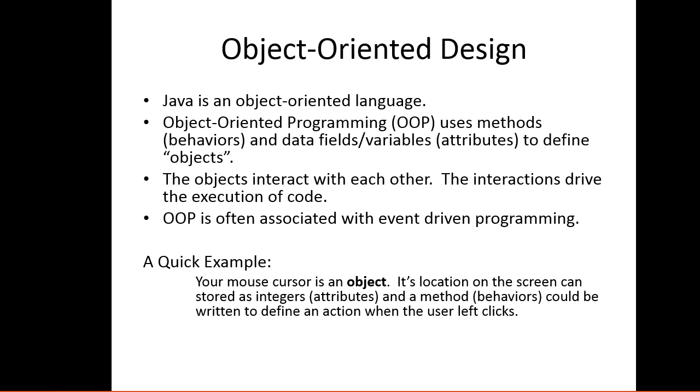Let's talk about object-oriented design. Java is an object-oriented language. Object-oriented programming, or OOP, uses methods (behaviors) and data fields and variables (attributes) to define objects. The objects then interact with each other, and the interactions drive the execution of your code. OOP is often associated with event-driven programming.